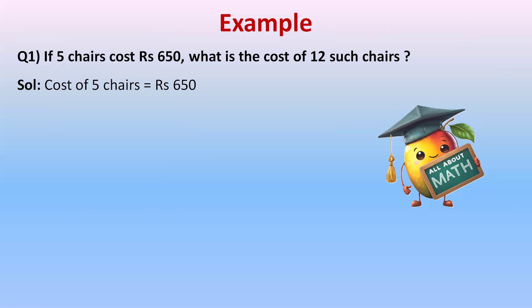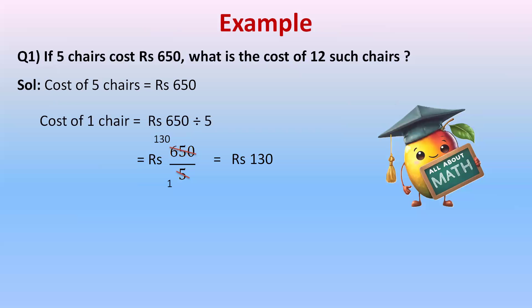To find the value of one, we always divide. Cost of one chair equals 650 divided by 5. We can simplify — 650 by 5: five 130s are 650, so the cost of one chair is rupees 130.